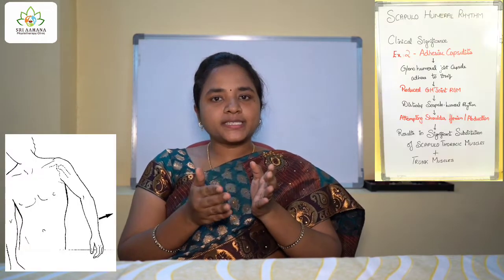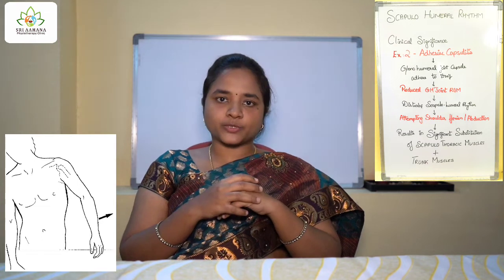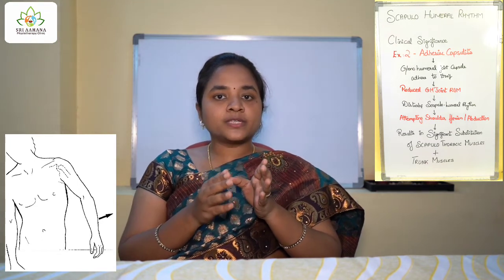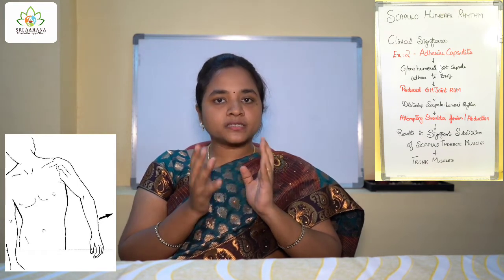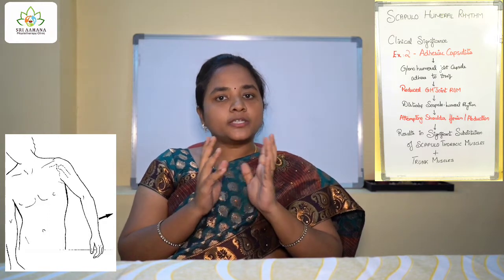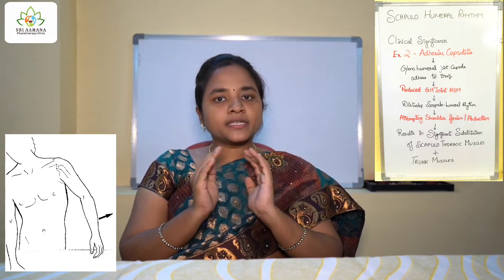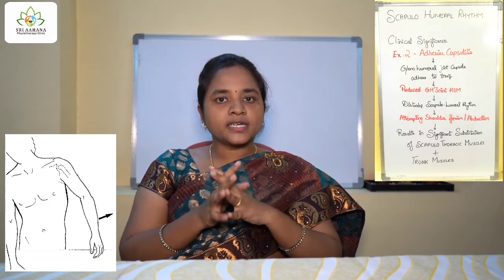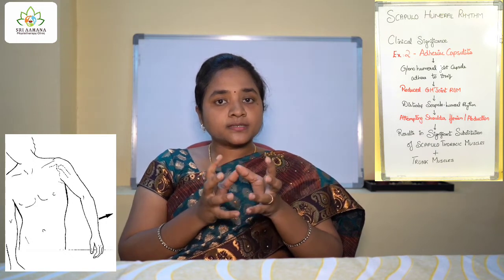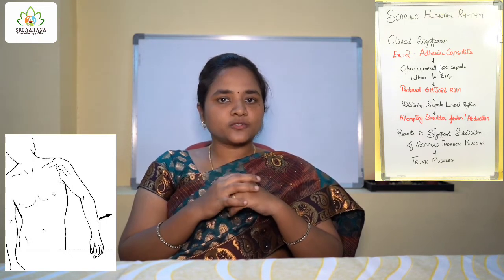The second example is adhesive capsulitis. The scapulohumeral rhythm in adhesive capsulitis will be disturbed. The glenohumeral joint capsule adheres to the joint in this condition, which restricts the shoulder joint range of motion, and this in turn will disturb your scapulohumeral rhythm.